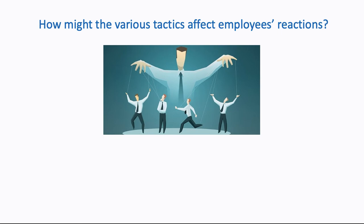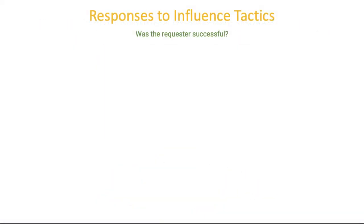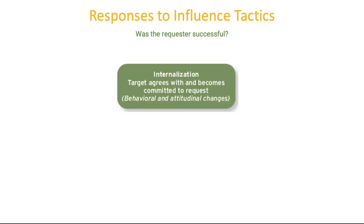How might these tactics affect employees' reactions? Research tells us that depending on the tactic we use, it's going to influence employees' attitudes and behaviors in both positive and negative ways. There are three different ways we can respond to influence tactics. The first is called internalization. This occurs when the target agrees with what we're asking and becomes committed to the request — we see both behavioral change and attitudinal change. They're on board with and want to make the changes, and so they do.